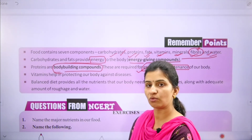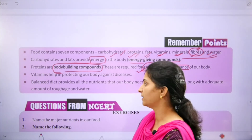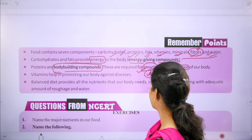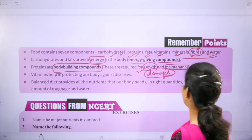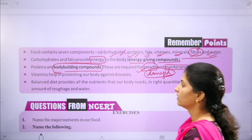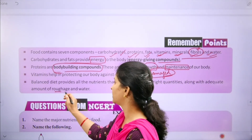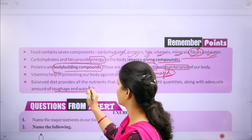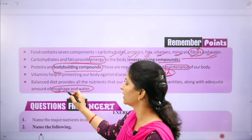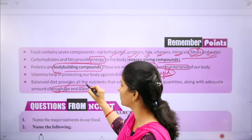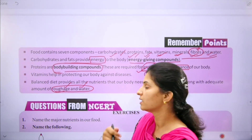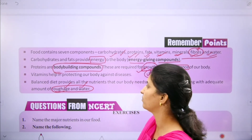A balanced diet provides all the nutrients that our body needs in the right quantities, along with an adequate amount of roughage and water. Balanced diet means all nutrients in appropriate amounts, and roughage and water are also important.